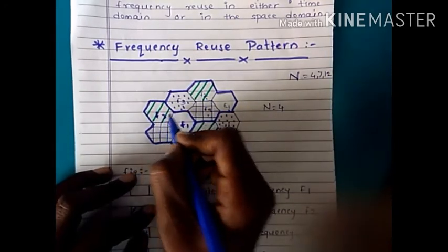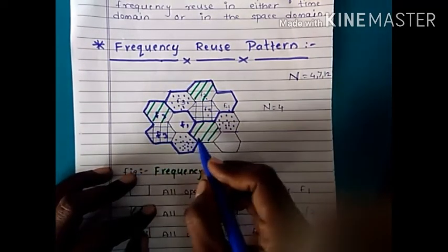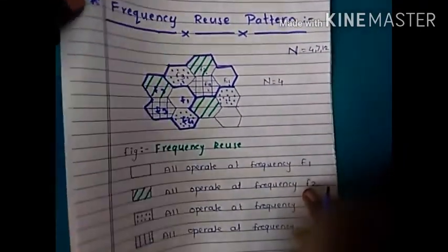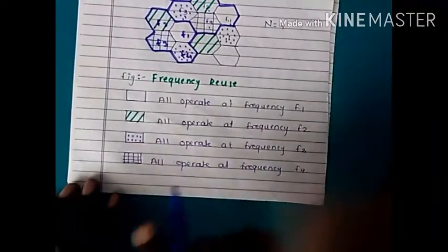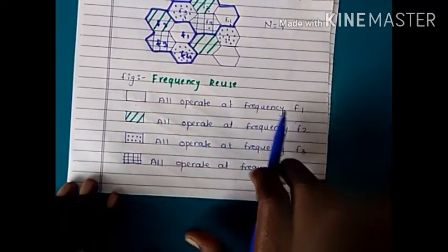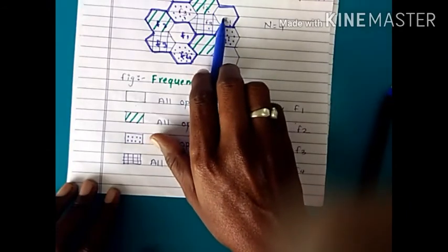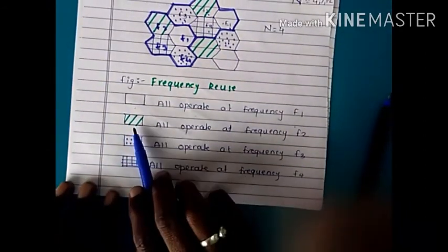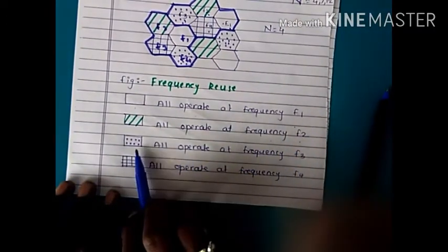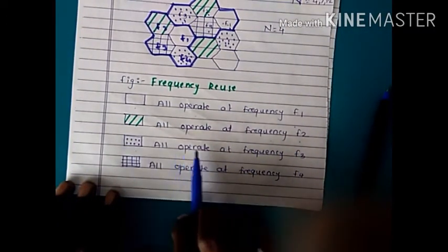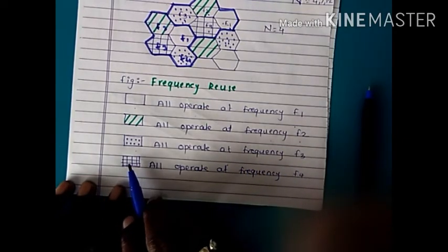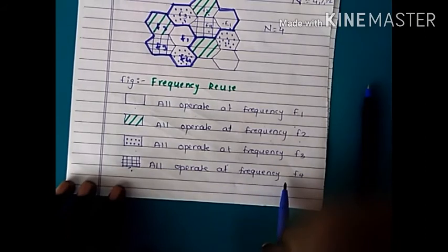The frequency assignment pattern shows cells operating at different frequencies. Some cells operate at frequency F1, the green colored cells operate at frequency F2, blue colored cells operate at F3, and other cells operate at frequency F4.